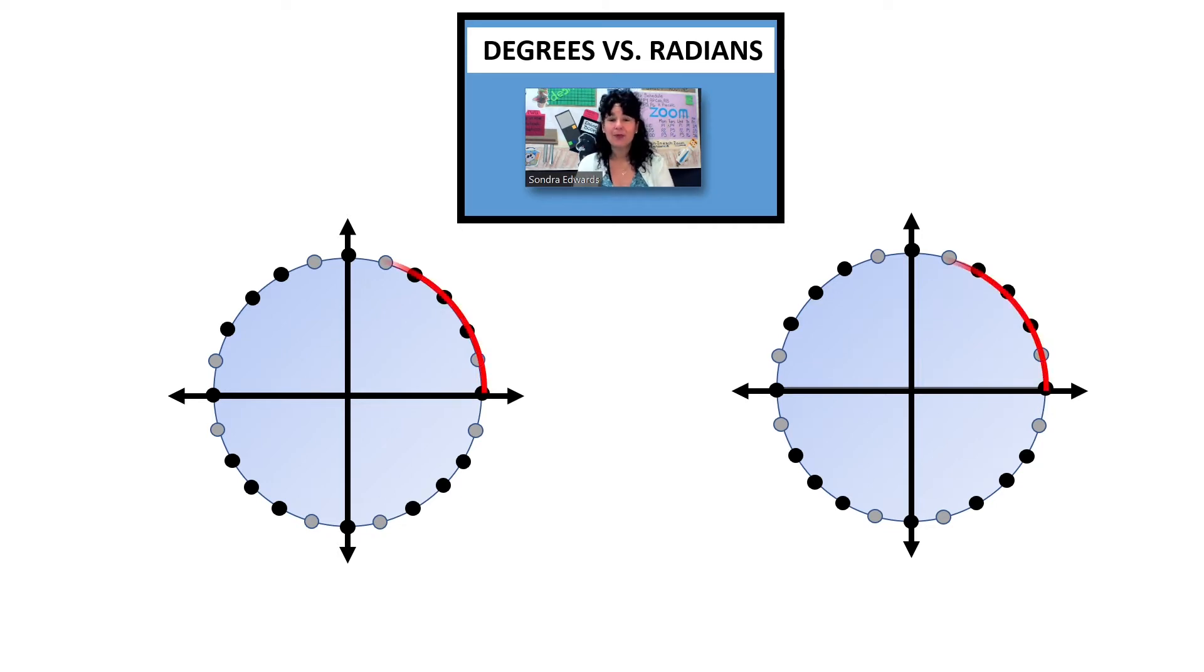Many people just memorize a handful of angle measures in terms of radians and do that to get by, not really understanding what a radian is. For example, if we have an angle measure that is like a half a circle, 180 degrees, that's the same thing as an angle measure known as pi. So why is that pi? Well, let's start there.